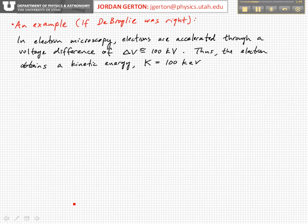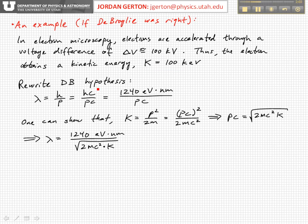Since we're talking about electrons accelerated through 100 kilovolts, they obtain a kinetic energy of about 100 kiloelectron volts. If we take the de Broglie hypothesis, H over P, we can rewrite it by multiplying top and bottom by C. If you remember from last lecture, we can write HC as 1240 electron volts times nanometers.